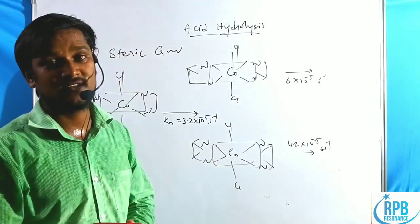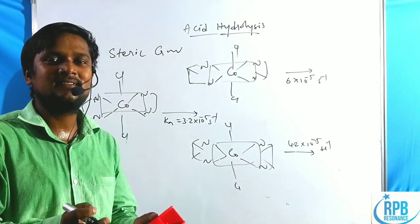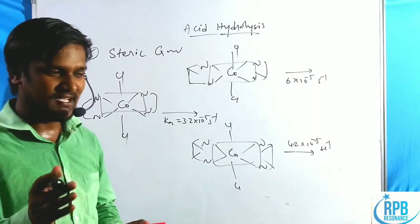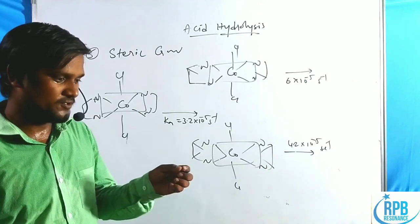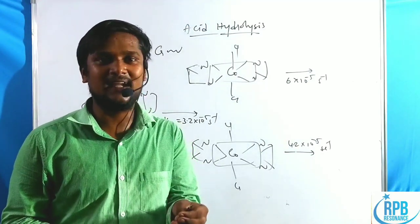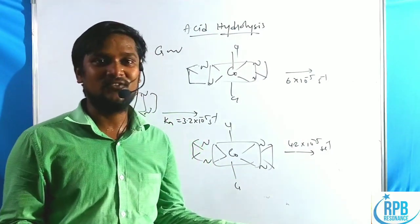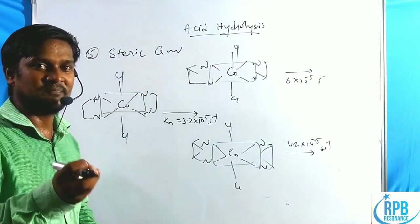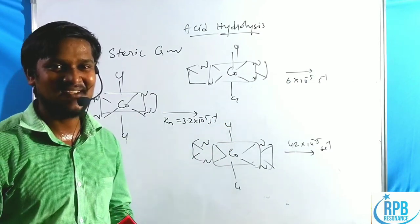These five factors - metal-ligand bond strength, charge on the complex, inductive effect, solvent effect/chelation, and steric crowding - all explain that acid hydrolysis follows the dissociative mechanism. A follow-up video will address previous year CSIR, NET, and GATE questions on acid hydrolysis, including topics like pi-donor versus pi-acceptor ligands and cis versus trans effects on acid hydrolysis reactivity.